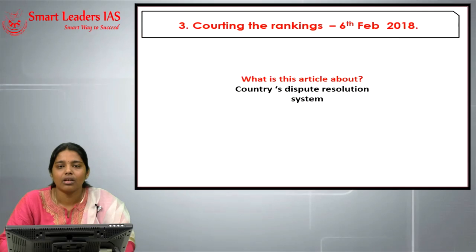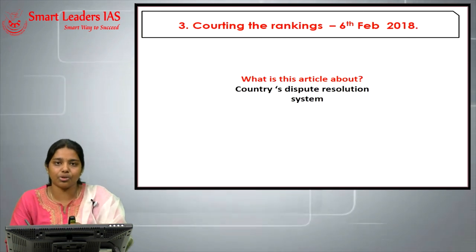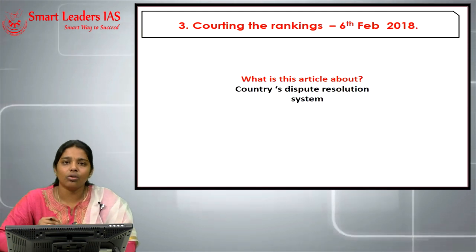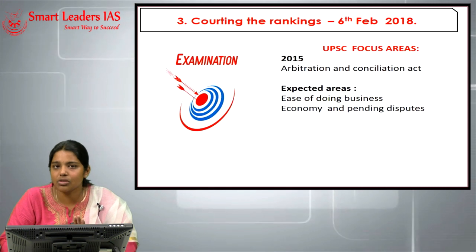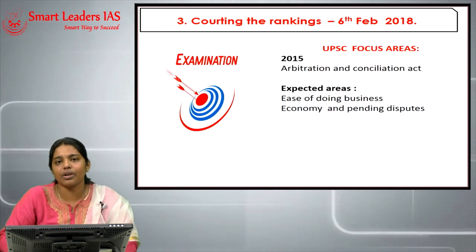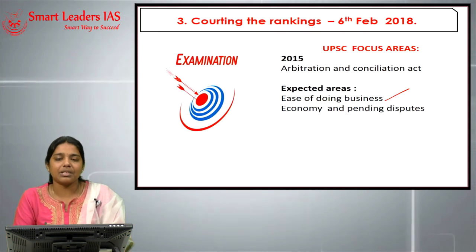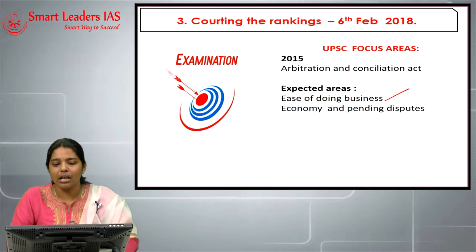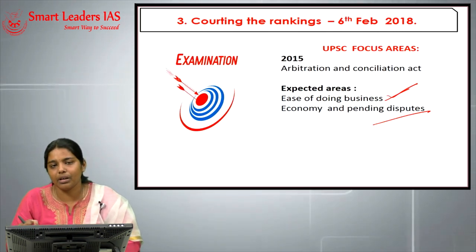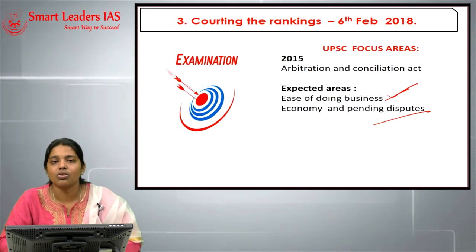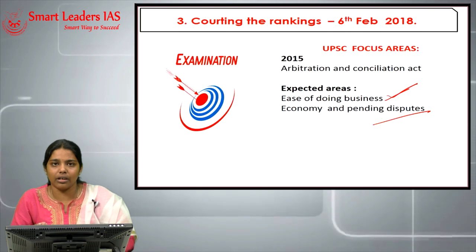Moving to the next topic: costing the rankings. India recently improved its rank in Ease of Doing Business from 130th to 100th position, but there are still areas to improve — one such area is the dispute resolution system, specifically arbitration and conciliation mechanisms. This was asked in UPSC 2015. We can expect questions like: what steps has the government taken to achieve this 30-place jump, or what is the economic impact of delayed dispute resolution?